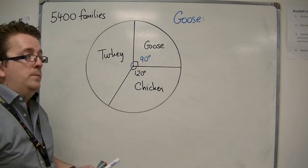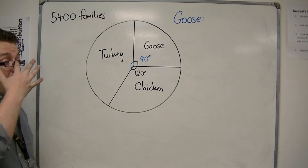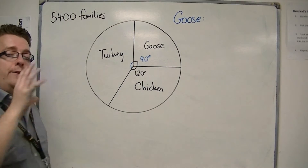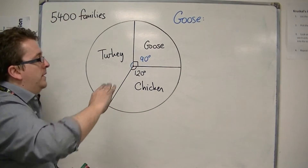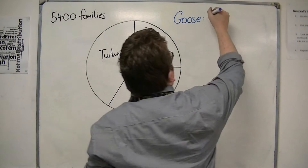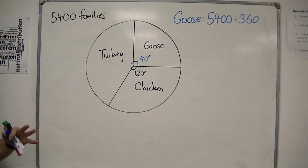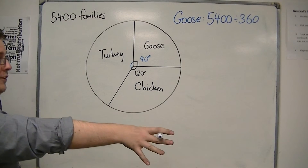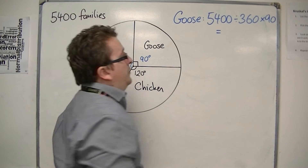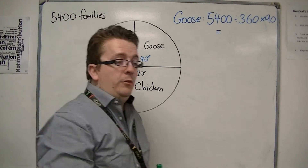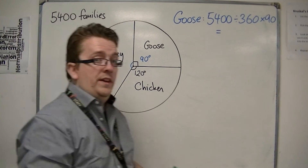What we're going to do is split this pie up into 360 pieces, because all circles — and the angles around a point — have 360 degrees. So we're going to take the 5,400 families and split this up into 360 pieces. Then, once we've got it in 360 pieces, we want 90 of them, so we multiply by 90. So 5,400 divided by 360, times by 90.